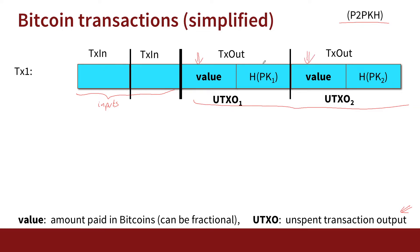These outputs, when they're first created, we call them UTXOs — unspent transaction outputs. That's actually where funds are going to be held. The address itself is the hash of the public key; HFPK1 is going to get one value, HFPK2 is going to get another value, and that's going to be recorded on the blockchain so everybody knows how much funding was transferred into these two addresses.